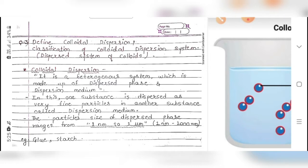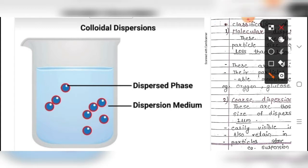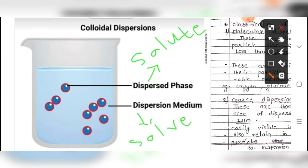Colloidal dispersion is a heterogeneous system which is made up of a dispersed phase and a dispersion medium. To understand with an example: dispersed phase means solute, and dispersion medium means solvent — the solute to be added and the solvent in which the solute is added. The solute and solvent combine together to form a solution.